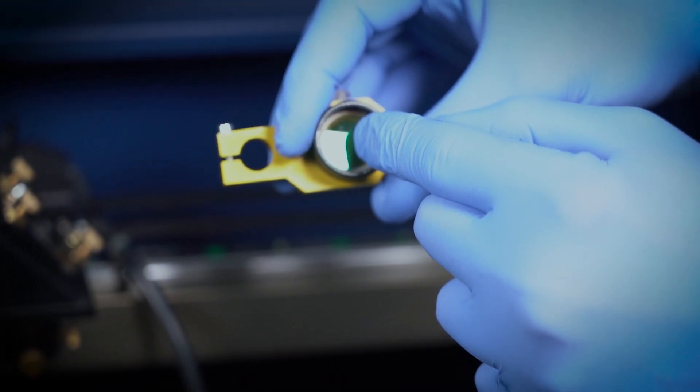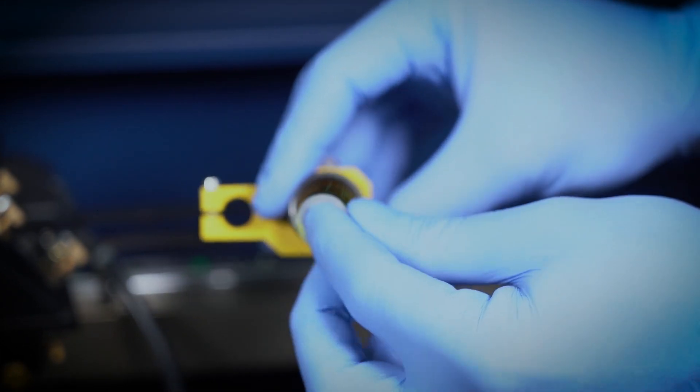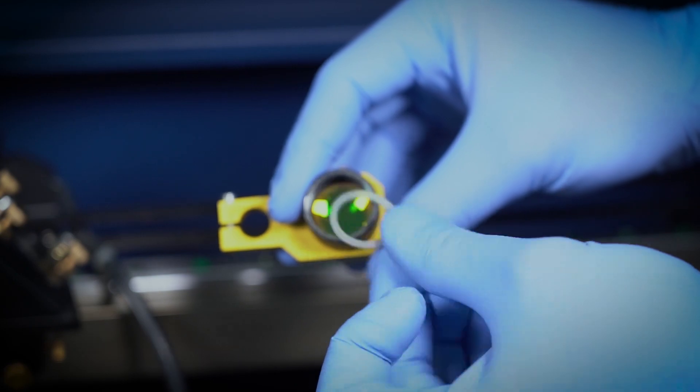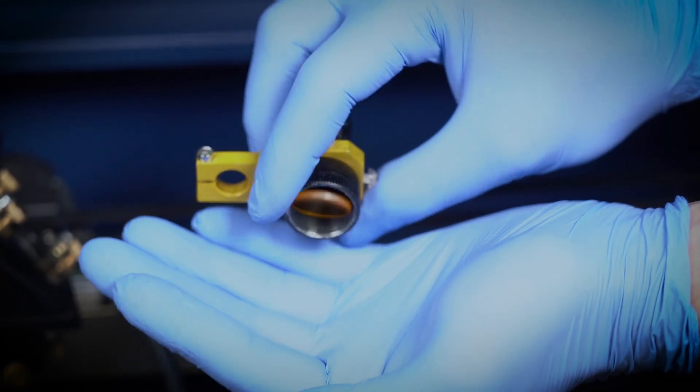So there's a little rubber grommet we're going to remove. Take that out. And now your lens will pop out freely.